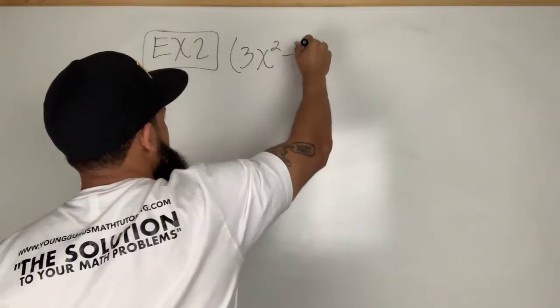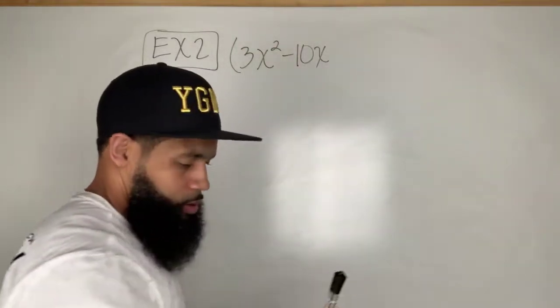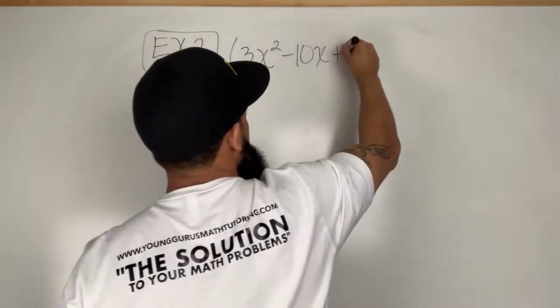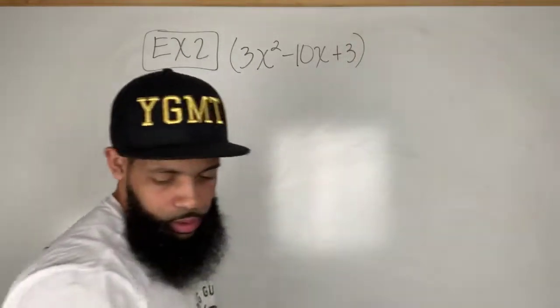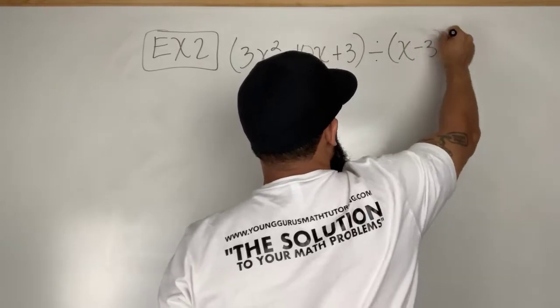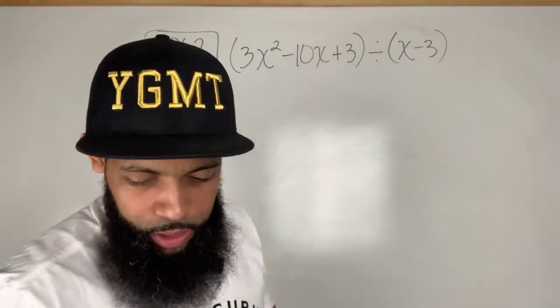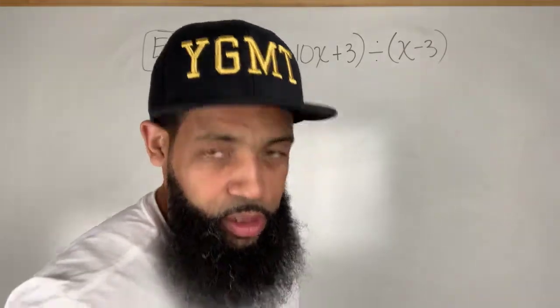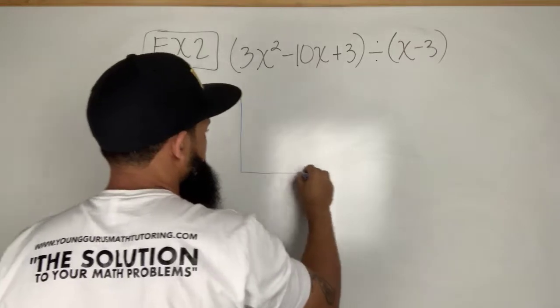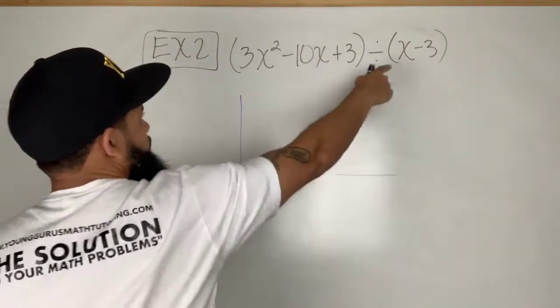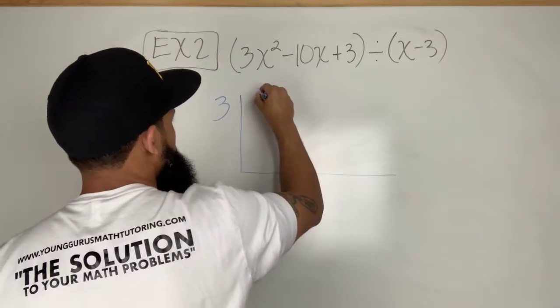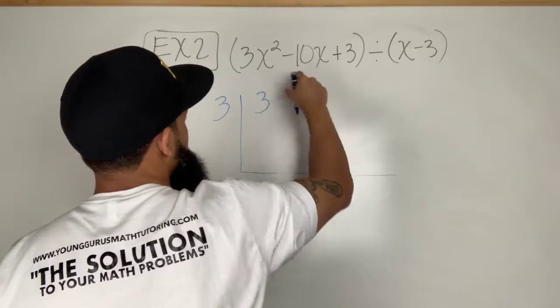Let's do another example. Example two: three x squared minus 10x plus three, divided by x minus three. All right, I'm going to switch colors here because this marker looks like it's fading a little bit, so bear with me please. I rewrite this little thing like here, I put the three on the outside.